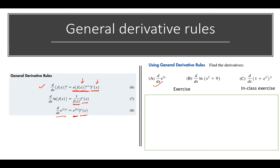Let's go over a quick example. We have the derivative of e to the power of 2x. Treating the exponent 2x as an entity, the outermost level is e to the power of 2x, which is the first level. The second layer is the derivative of 2x with respect to x, which gives 2. Multiplying together gives 2 times e to the power of 2x. This is the result by decomposing this series of transformations.